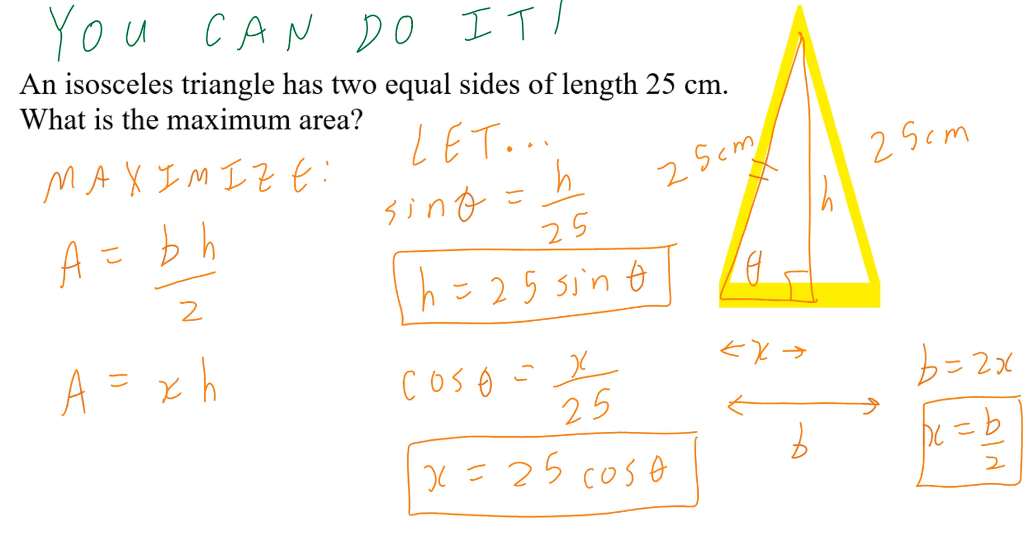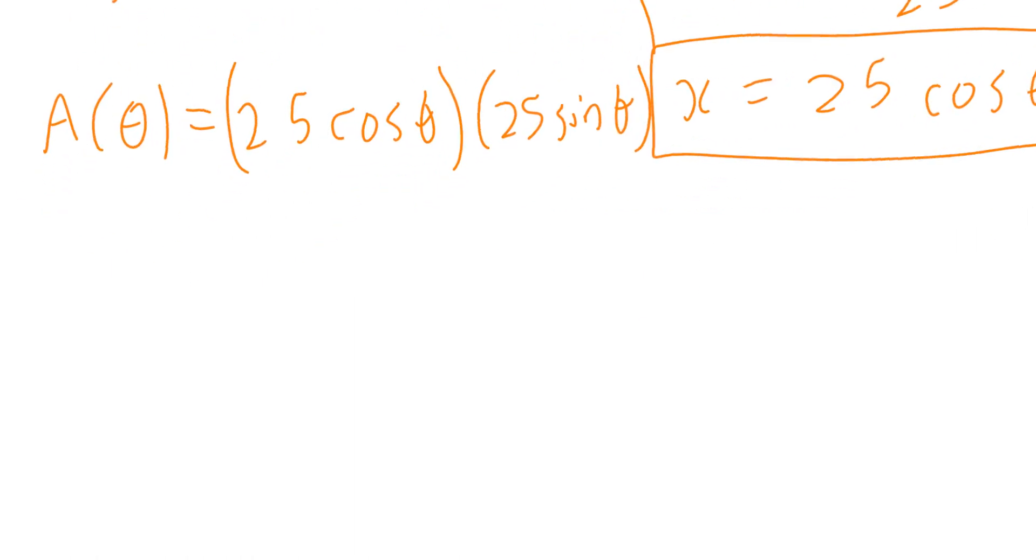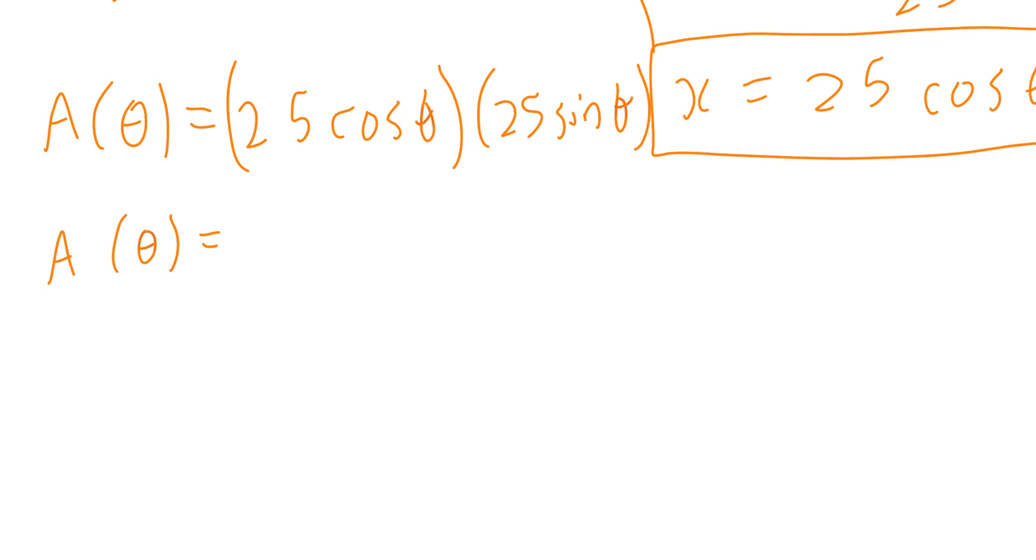When you're trying to optimize this using a trig approach, the key is not to express this only in terms of x or height, but to express this only in terms of angle theta. So x is 25 cosine theta, and height is 25 sine theta. So let's zoom in for you a little bit here.